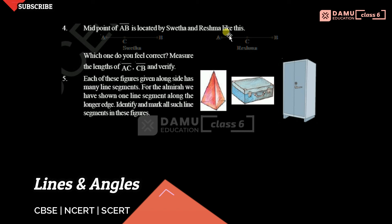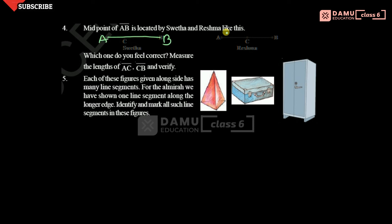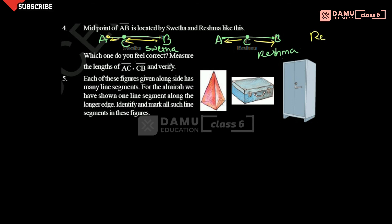The midpoint of AB is located by Sweta and Reshma. So this one is AB. Sweta located a point here. Then for segment AB, midpoint C was located by Reshma. Which one do you feel is the correct measure? Actually, Sweta's point C is near to A and somewhat far from B. But Reshma's point gives equal distance from A and B. So I think Reshma is correct. If you measure from this point, you will get equal distances — so Reshma located the midpoint correctly.